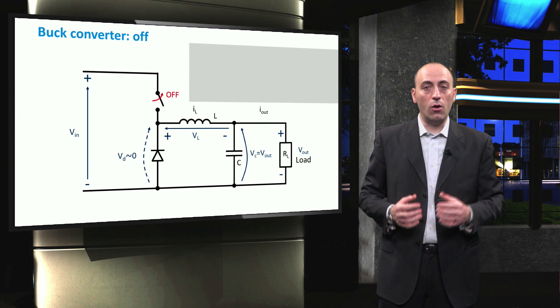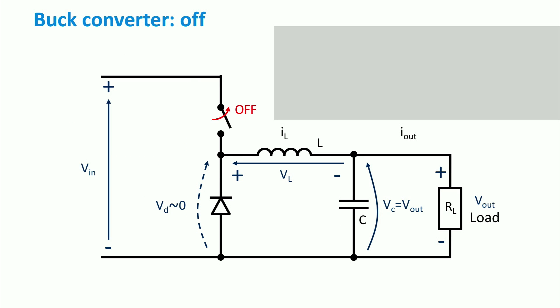When the switch is OFF, the current flows only in this part of the circuit. Here, the energy that has been stored in the coil as magnetic field will drive the current towards the resistive load with the help of the flyback diode. Now, with the Kirchhoff law, during the OFF mode, we obtain the voltage across the inductor expressed as the difference between the voltage across the flyback diode and the voltage across the capacitor or the output voltage.